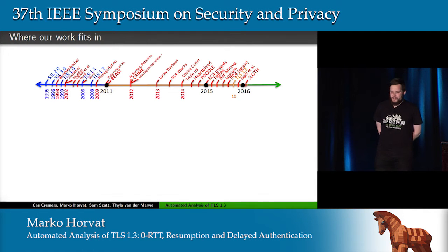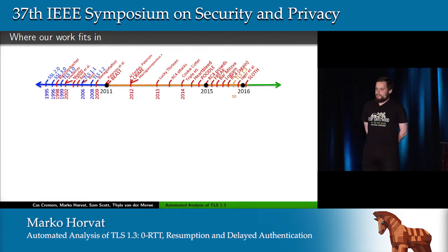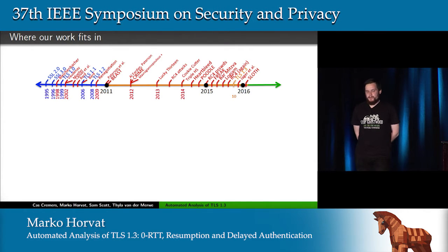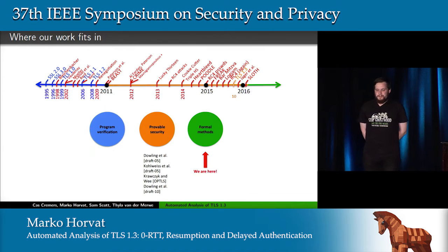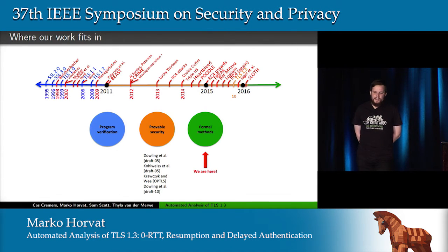Let me situate our work for you first. TLS, as you might know, has a long history of being broken and fixed, and our contribution to this field came about in the year 2015. The best part of it was spent to analyze TLS 1.3 and in October the cool stuff started to emerge. What we do are formal methods — in particular the symbolic verification of security protocols — and we consider our work to be complementary to the provable security work that's being done, and here are four great papers cited.